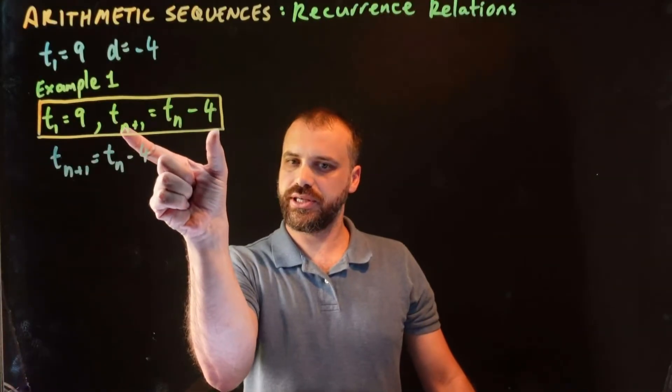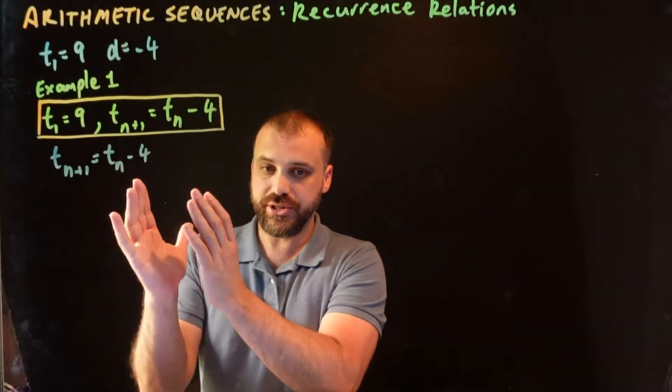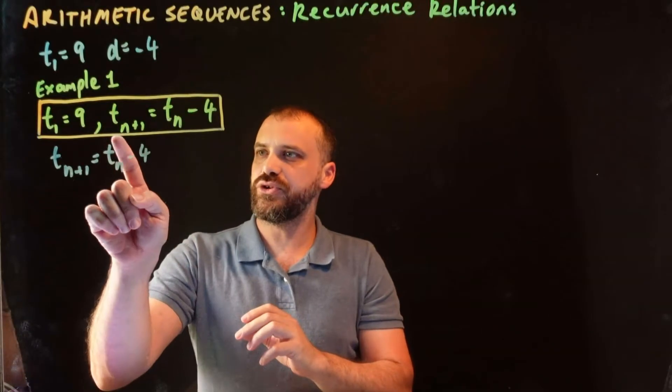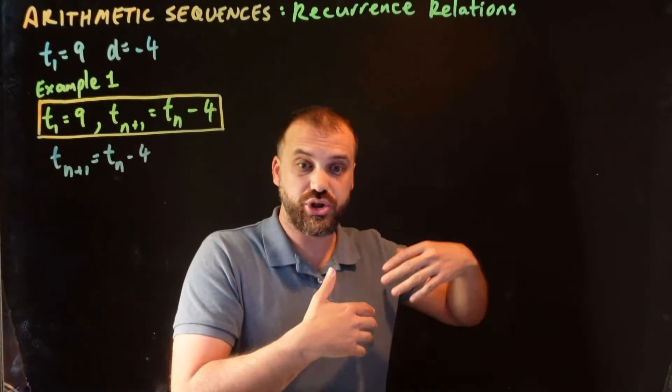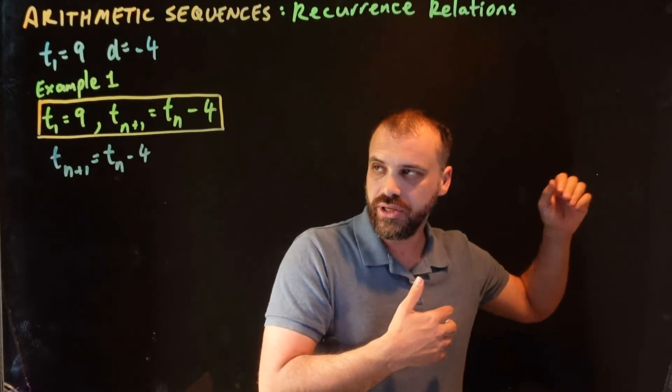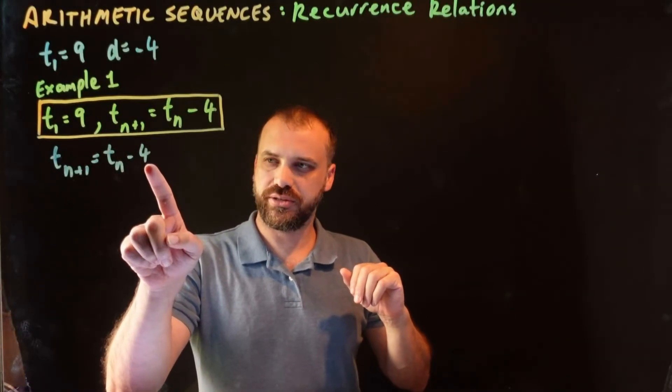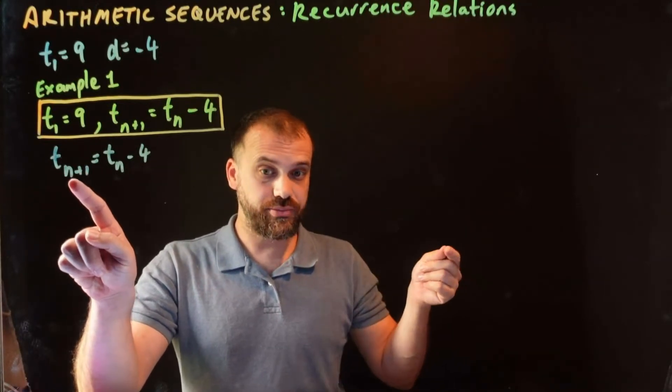I've just rewritten this formula here, down here, in blue. Now, let's just focus on this and try to understand what it's saying. It's saying, if you know a term, term n, it doesn't matter what term, it could be term 5, it could be term 100, it could be term a million. If you know that term, subtract 4 from it, and you'll know the next term.